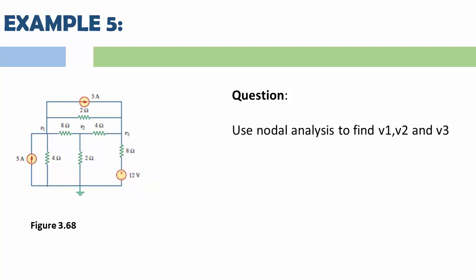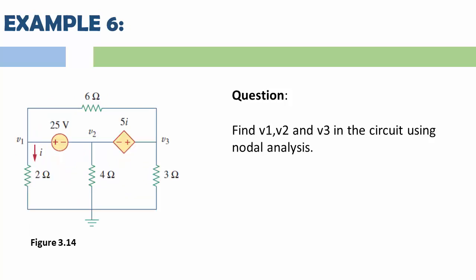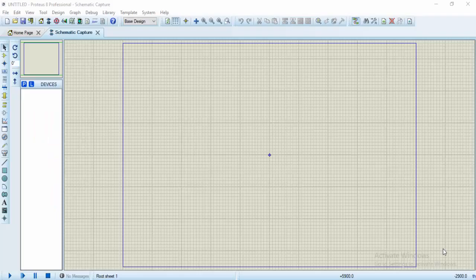Do that for Example 4 and Example 5. Then for Example 6, which is our last example, I'm going to simulate that and show you how to do it. This example contains a voltage source and a current controlled voltage source — just like Example 3 contained a current controlled current source, but here we have a current controlled voltage source. I'm going to show you how to simulate this in Proteus. For Example 6, let's pick and draw the components.